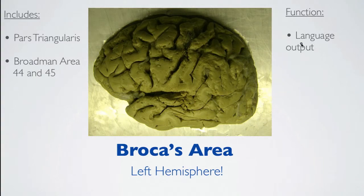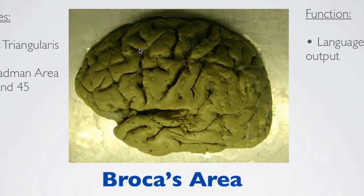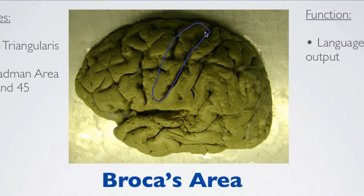Here again, you first want to locate the central sulcus. In this brain, it would be around here. And in front of that, you would have the precentral gyrus, which would be around here. And you will find Broca's area in front of the precentral gyrus, like around here.